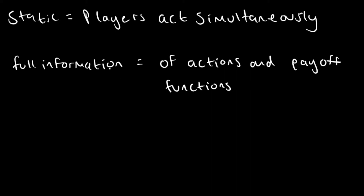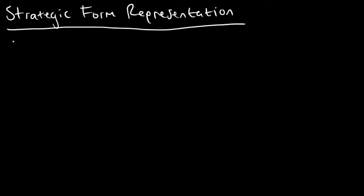Now that we're clear on what we mean by these, let's look into what we mean by strategic form representation and what this is going to entail. What the strategic form representation is going to do is, for each player within the game — for each player i, i just being an arbitrary player within our set of players — it's going to specify certain things.